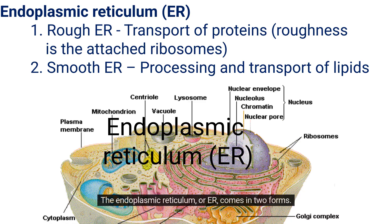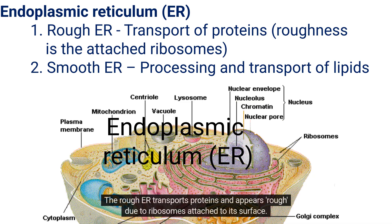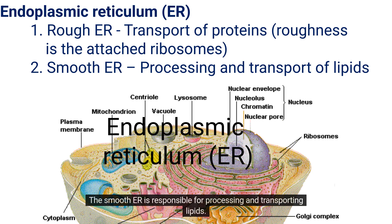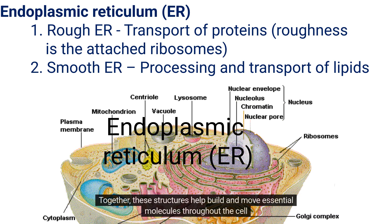The endoplasmic reticulum, or ER, comes in two forms. The rough ER transports proteins and appears rough due to ribosomes attached to its surface. The smooth ER is responsible for processing and transporting lipids. Together, these structures help build and move essential molecules throughout the cell.